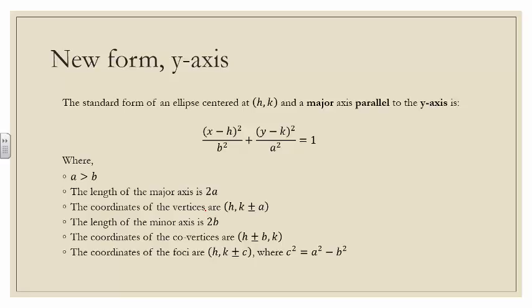The length of the major axis is 2a. The coordinates of the vertices are h comma k plus or minus a. The length of the minor axis is 2b. The coordinates of the co-vertices are h plus or minus b, comma k. The coordinates of the foci are h comma k plus or minus c, where c squared equals a squared minus b squared.